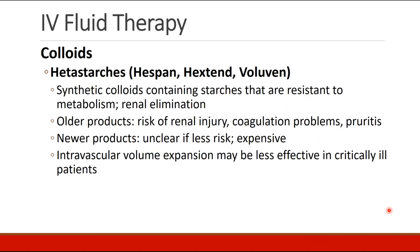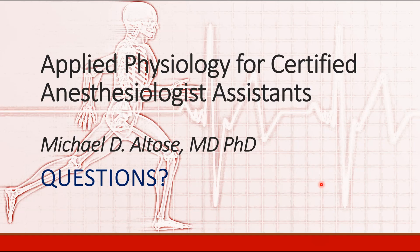There are other colloids available, primarily hetastarches like Hespan, Hextend, or Voluvin. These are synthetic colloids with starches that are resistant to metabolism and are renally eliminated. The idea was that they create oncotic pressure in the intravascular space to retain or increase intravascular fluid. Older products carried some risk of renal injury and coagulopathy; newer products may be less risky but are very expensive. In critically ill patients, it's not clear that these products provide any significant benefit over goal-directed crystalloid therapy. That's the end of our discussion about colloids, but we have much more to discuss about fluids, so stay tuned for the next recording.